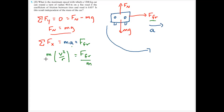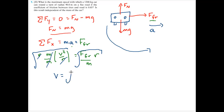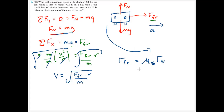I'll divide both sides by mass and multiply both sides by radius. The radius and mass cancel out. Taking the square root of both sides isolates velocity: velocity equals the square root of force of friction times radius divided by mass. The force of friction equals mu sub s times the normal force, which is mu sub s times mass times gravity. Substituting that in, mass cancels out.